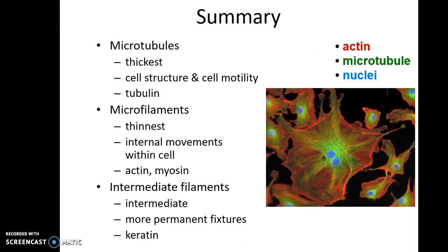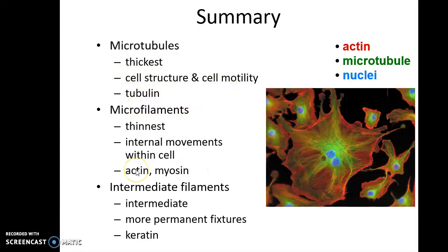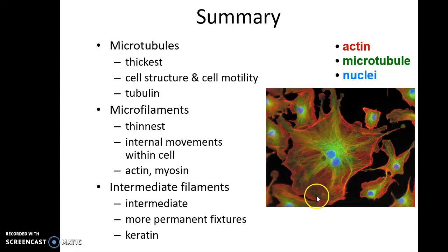To summarize, we have studied three types of cytoskeletal elements: microtubules, microfilaments, and intermediate filaments. Microtubules are the thickest, microfilaments are the thinnest, and intermediate filaments are in between. Microtubules are made up of tubulin and help in cell structure and motility. Microfilaments are made up of actin, sometimes with myosin, and help in internal movements within a cell. Intermediate filaments are made up of keratin and are more permanent in nature.